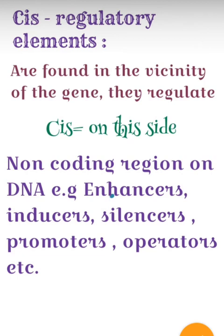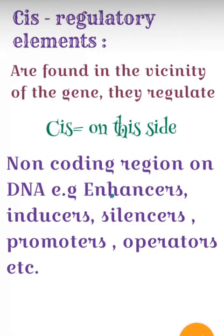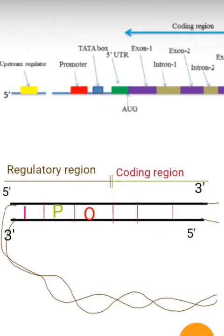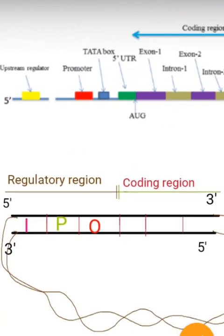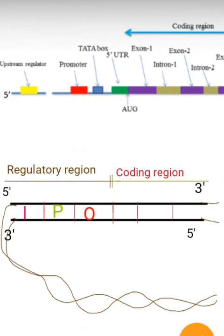Cis regulatory elements — 'cis' means these elements are found in the vicinity of the gene. You will get cis regulatory elements in the vicinity of your gene. In prokaryotic organisms, whenever we talk about an operon, we discuss the promoter and operator. We also have silencers, activators, and enhancers — these are all termed as cis regulatory elements because they help in regulation of the gene.